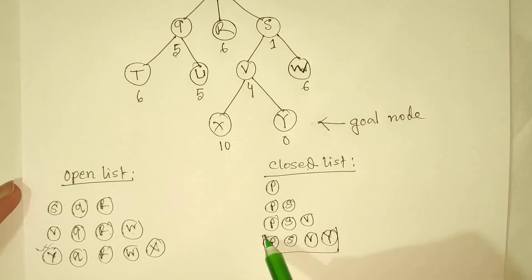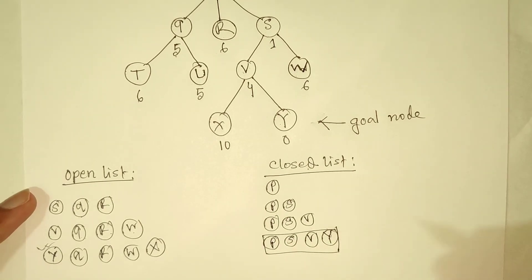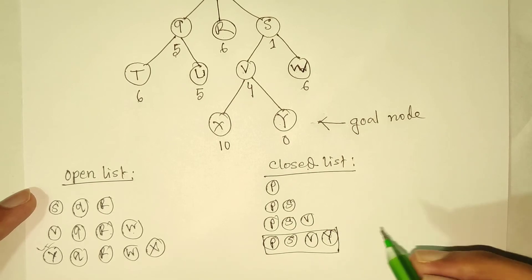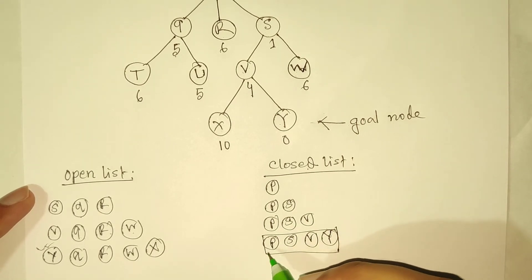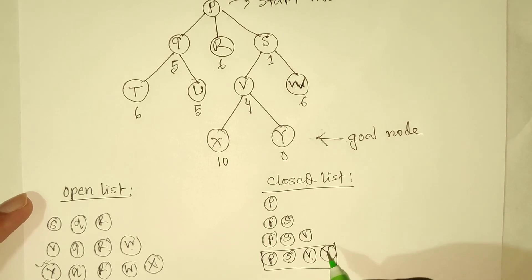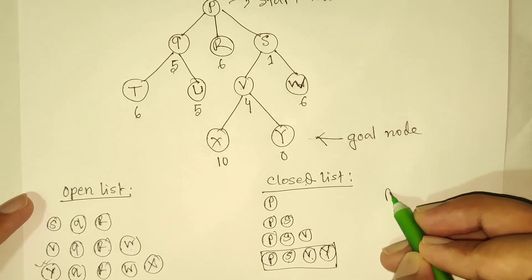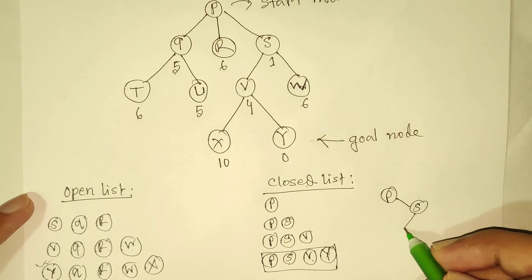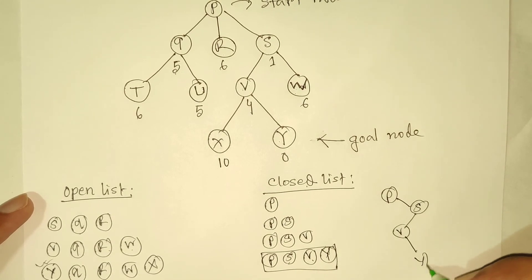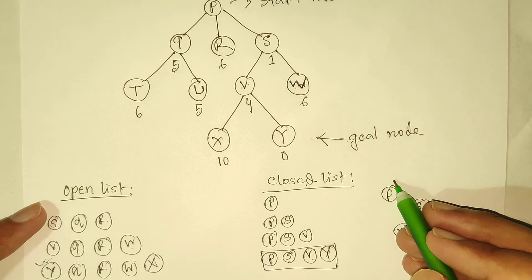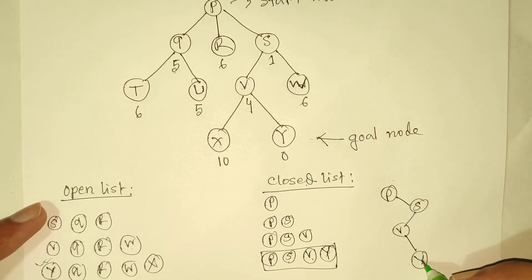This is the answer we were searching for using the Best First Search algorithm. The result path is: we go from P to S, then from S to V, then from V to Y. So P → S → V → Y is our path from start node to goal node.